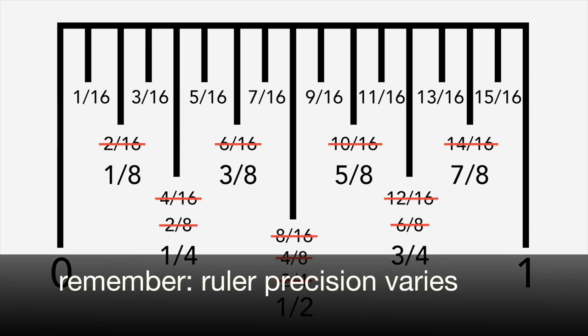Remember that it's possible for a ruler to have a precision of one eighth to one thirty-second. Our ruler in this example is a one sixteenth inch ruler.